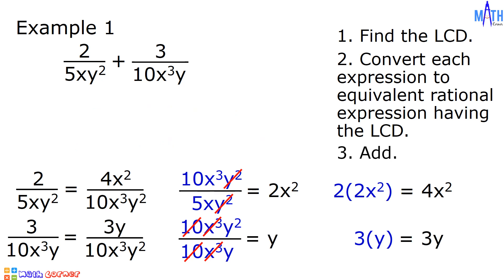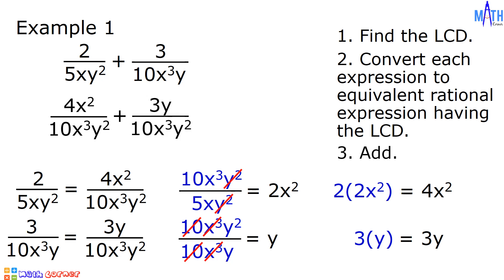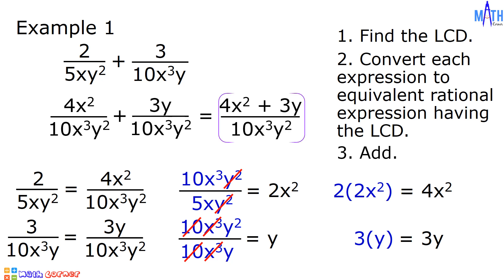Next step, let us add: 4x squared over 10x cubed y squared plus 3y over 10x cubed y squared. Let us add the numerators and copy the common denominator. In the numerator, we have 4x squared plus 3y, all over 10x cubed y squared. And this is the answer.